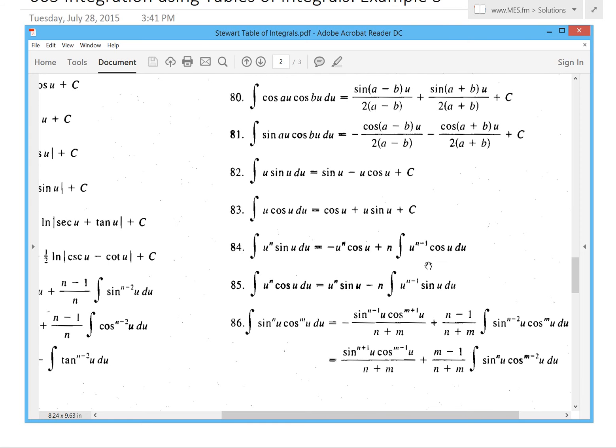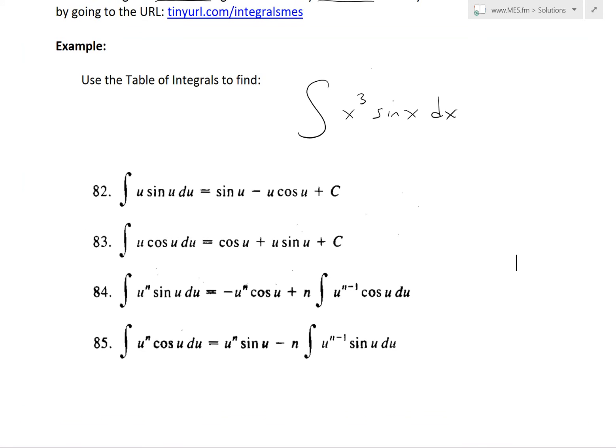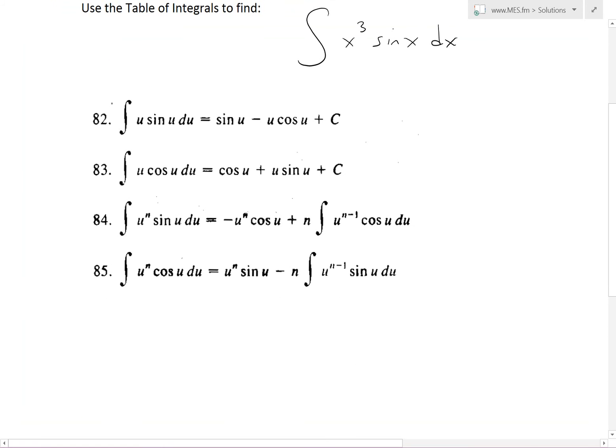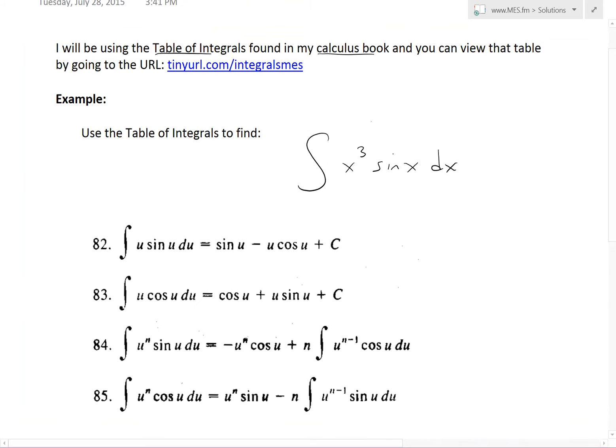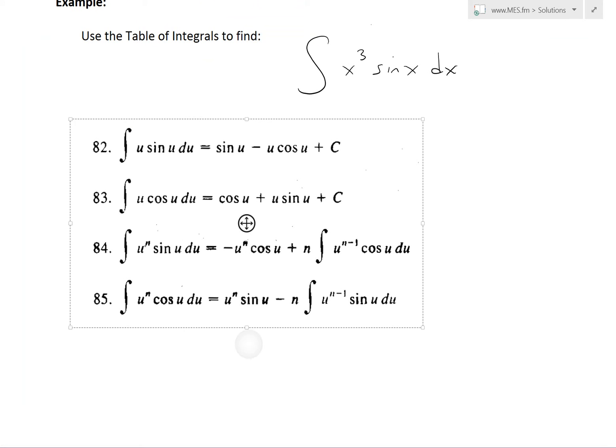Here I've basically copied and pasted formulas 82 all the way to 85, just because these are the only ones relevant to our problem. This one has u, and x³—this has the highest power as just power of 1. But here we could reduce from 3 to 2, n-1.